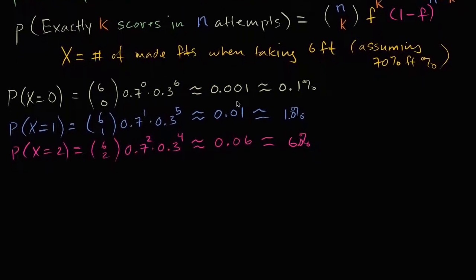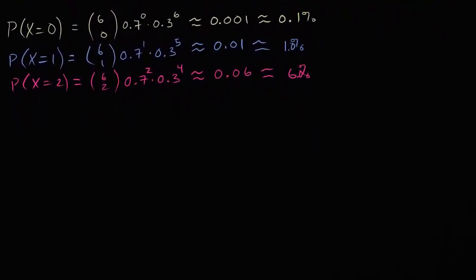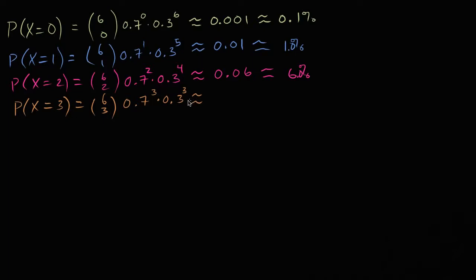The probability that our random variable is equal to three is going to be six choose three, times 0.7 to the third power, times 0.3 to the third power, which is approximately equal to 0.185, or 18.5%. That's definitely within the realm of possibility — it's starting to be a non-insignificant probability.